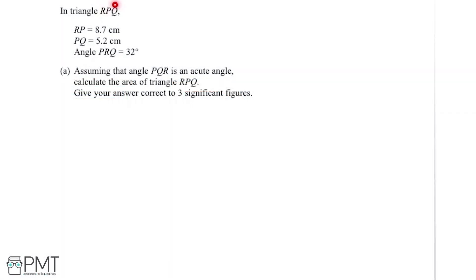In triangle RPQ, we know that the length RP is 8.7 cm, PQ is 5.2 cm, and the angle PRQ is 32 degrees. Part A says assuming that the angle PQR is an acute angle, calculate the area of triangle RPQ, giving it correct to three significant figures.